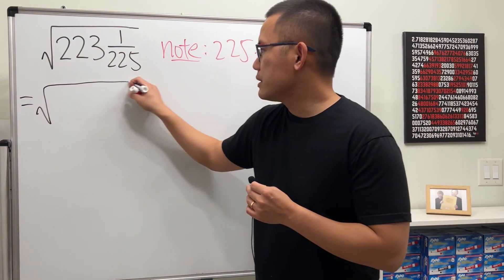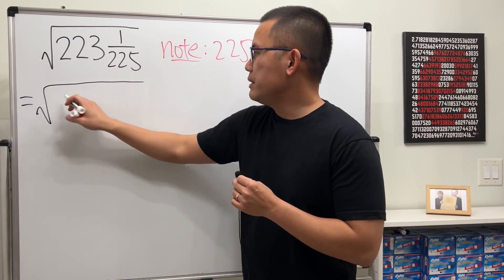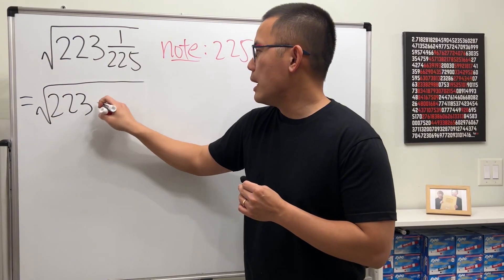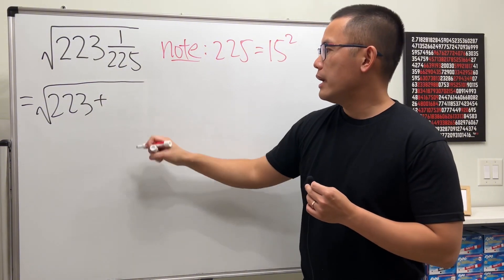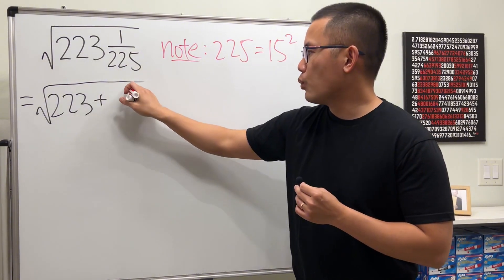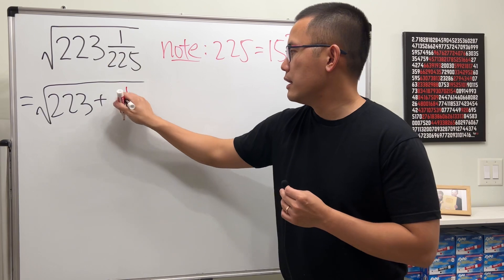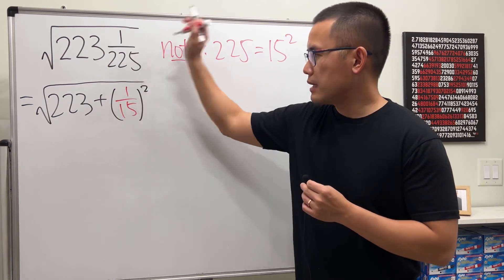Right here, we have square root. This means we have 223 plus 1 over 225. And for this, let me just write it as 1 over 15 squared.